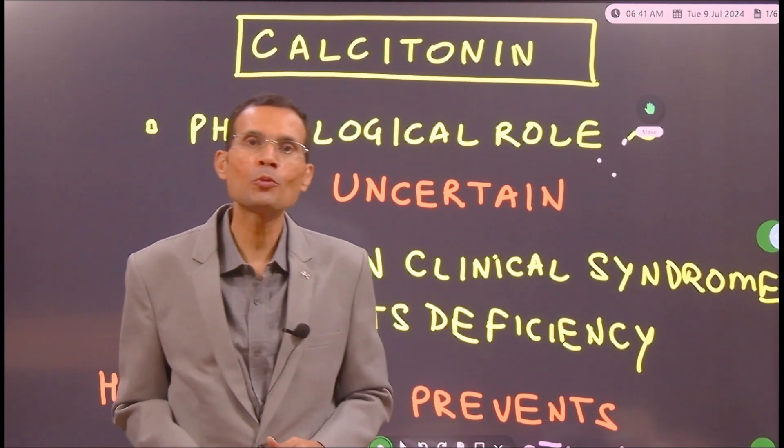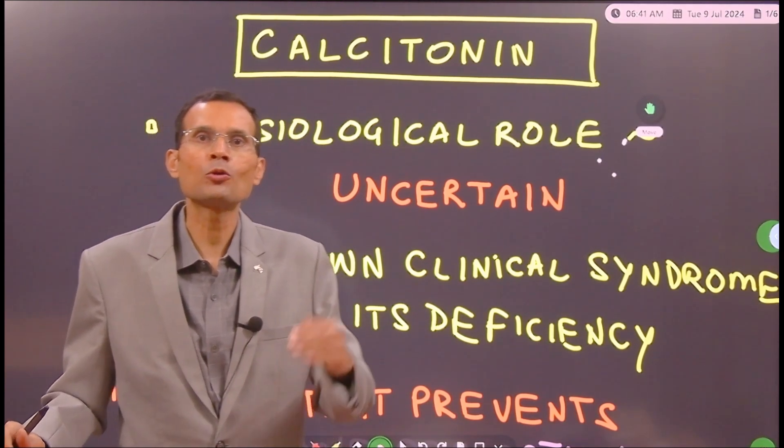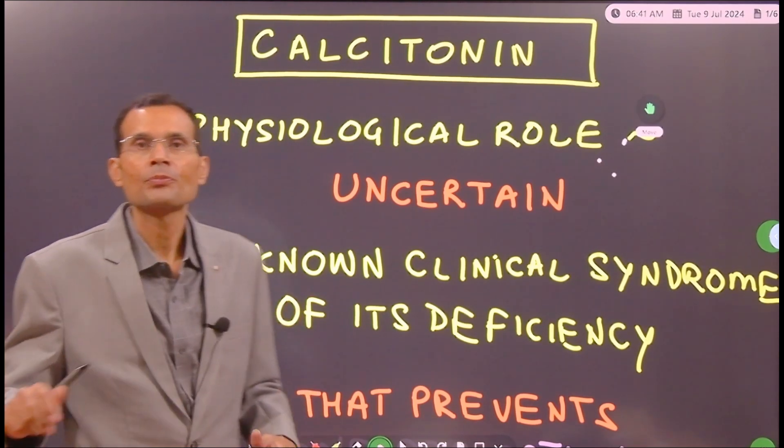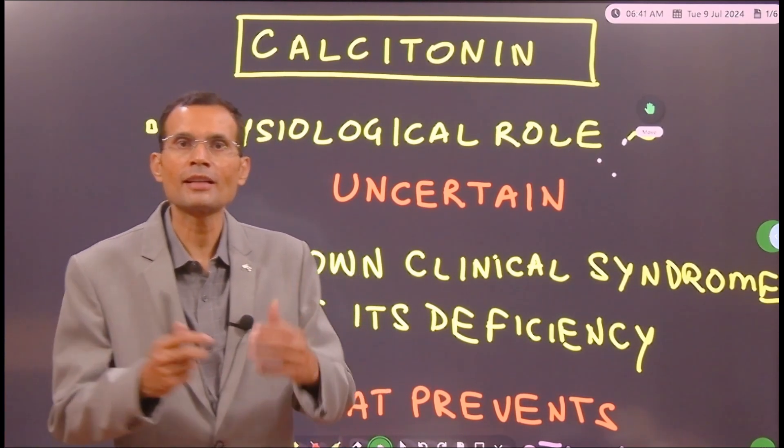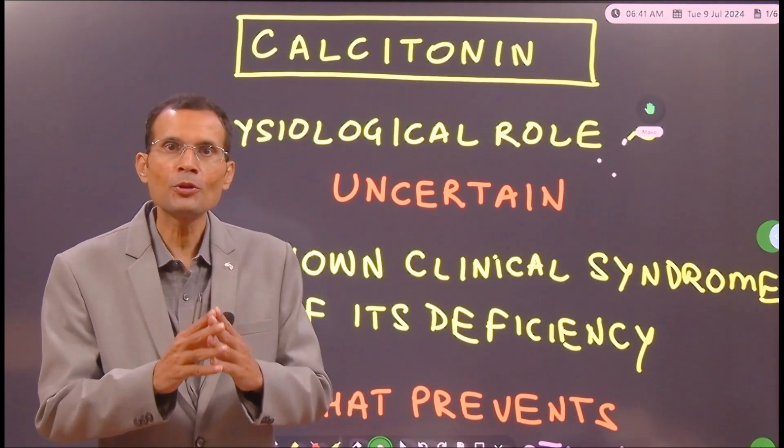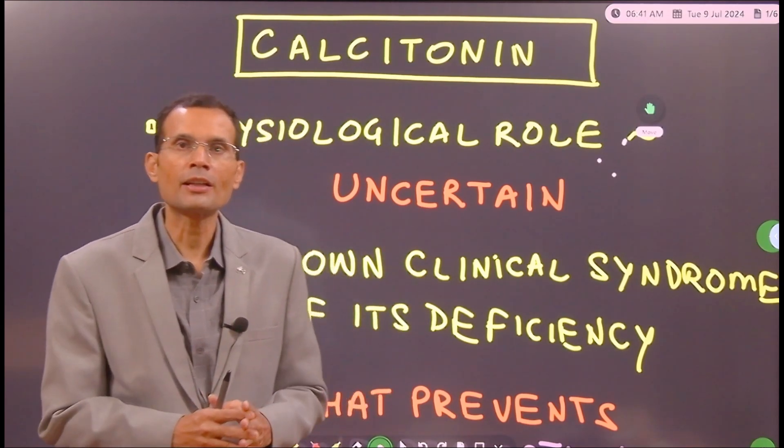Here is a hormone whose physiological role is uncertain, not very clearly known. Deficiency of this hormone is not known to produce any clinical syndromes or manifestations. So in that sense, this is an unusual hormone. I am talking about calcitonin, also called thyrocalcitonin.